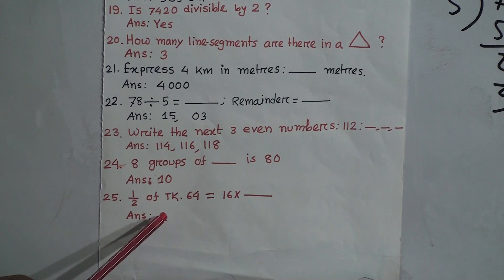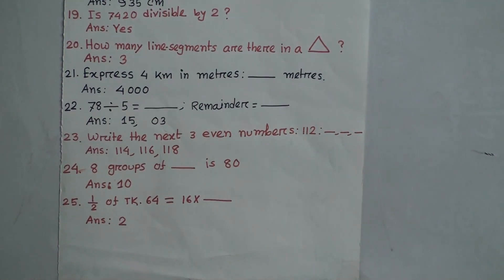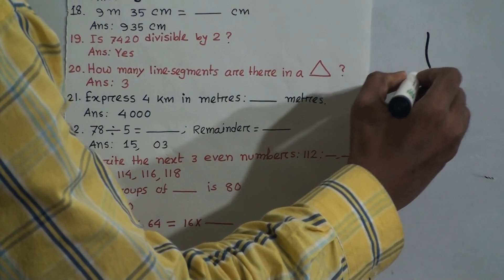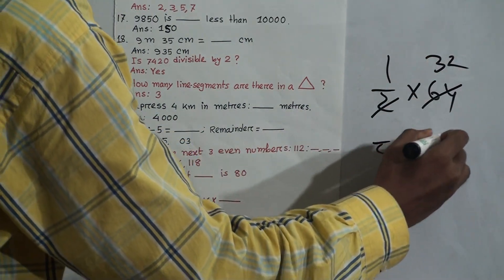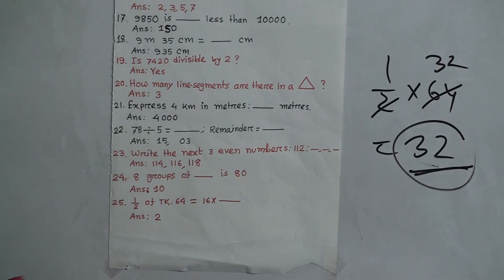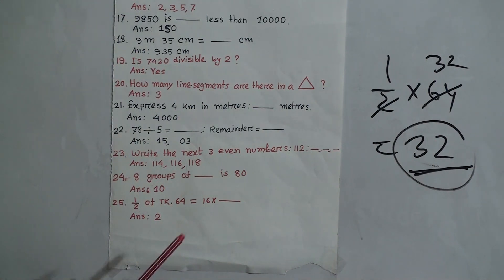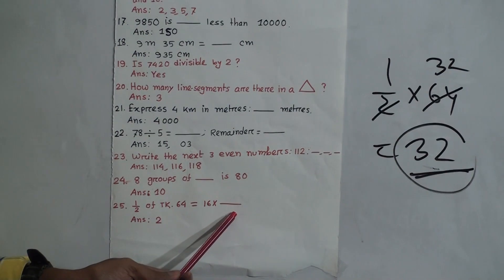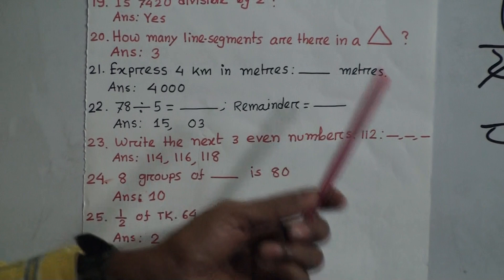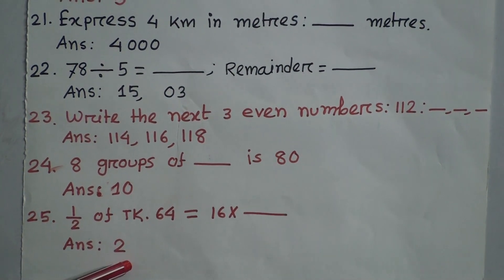Question 25: Half of Taka 64 equals 16 × dash. Half of 64 is 32. Now we need 16 × dash = 32. Since 16 × 2 = 32, the answer is 2.